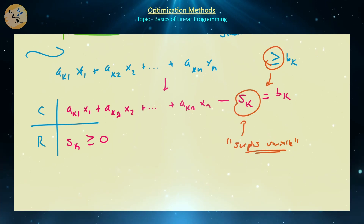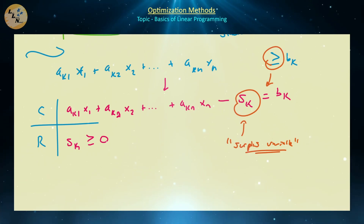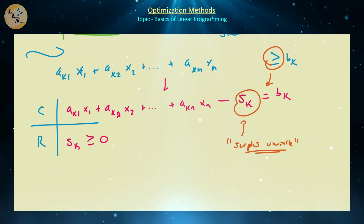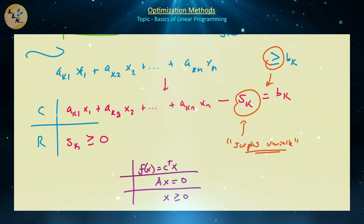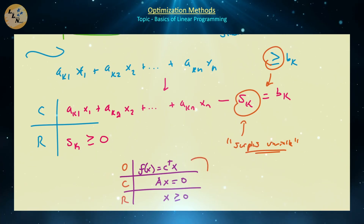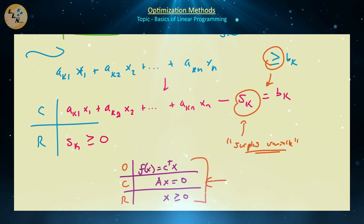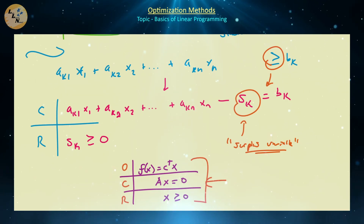These are not all the transformations possible on linear programs, but in the next video we'll use all of these tools to show that any linear program can be represented in a compact standard form: minimize f(x) = c^T x, subject to Ax = b, with restriction x ≥ 0. We'll go into detail on how to always achieve this form, assuming no non-linearity or stochastic processes. Until then, take care.